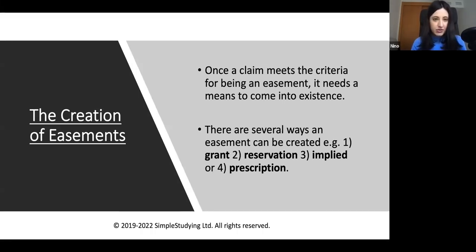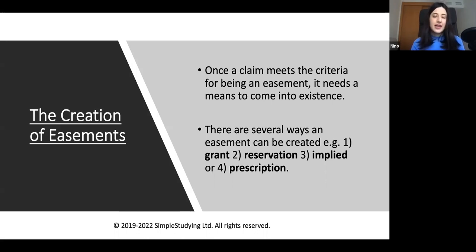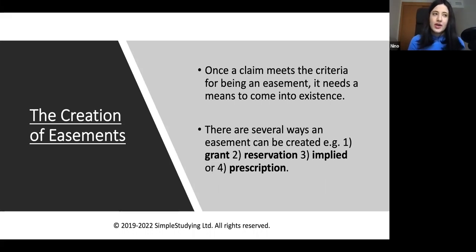Once a claim meets the criteria for being an easement, it needs to come into existence. There are several ways to create an easement — you need to discuss the one that is applicable to the facts given in the problem question, or whatever is relevant to the essay question asked. It can be created by grant, reservation, implication, and prescription. Make sure that you don't become too descriptive — a lot of students make that mistake and lose marks for becoming too descriptive.